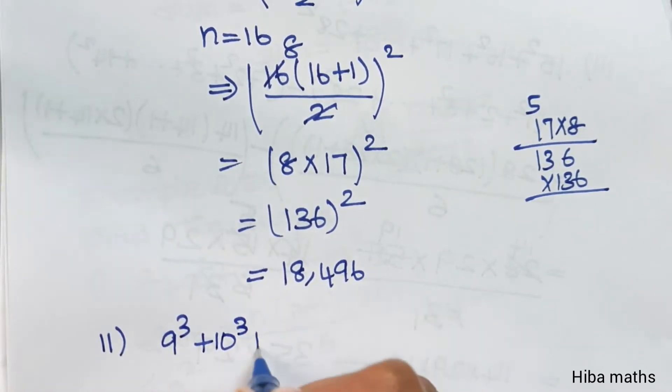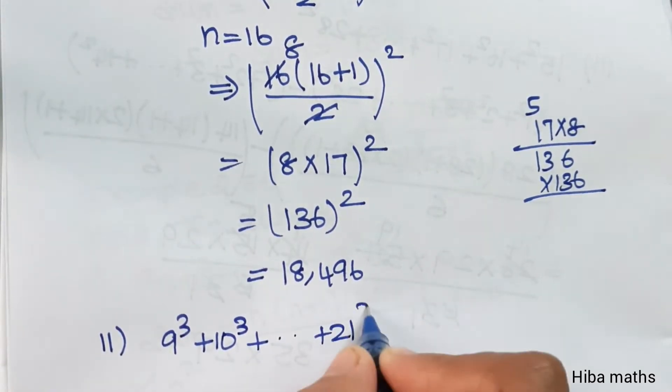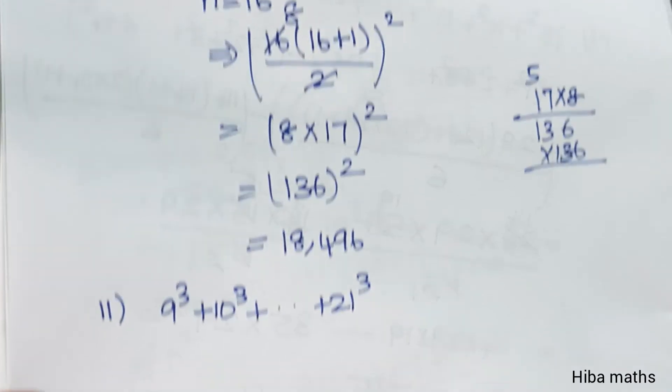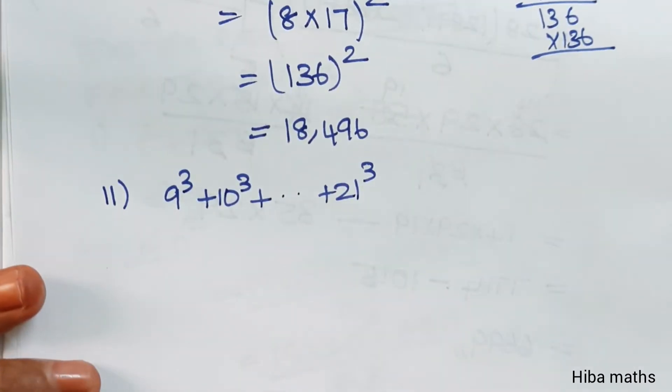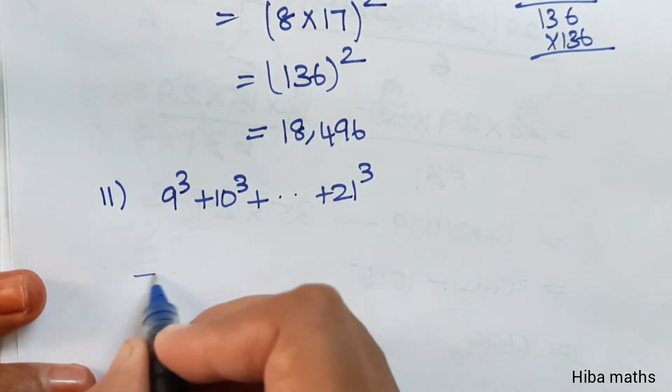Second subdivision: 9 cube plus 10 cube up to 21 cube. We can write this directly as the sum from 1 to 21 cubed minus the sum from 1 to 8 cubed.